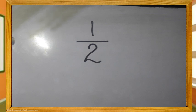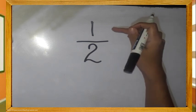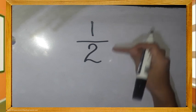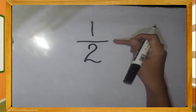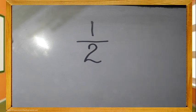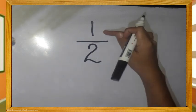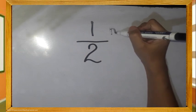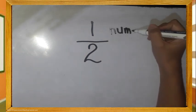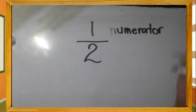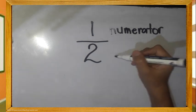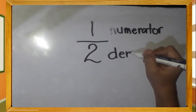Ano-ano ba ang bahagi ng fractions? Anong tawag sa numerong nasa taas at numerong nasa baba at ang pumapagitan sa dalawang numero? Ang nasa taas ay tinatawag nating numerator. Ang nasa ilalim naman ay tinatawag nating denominator.